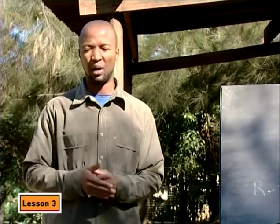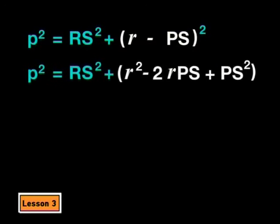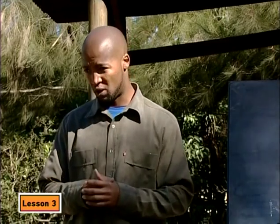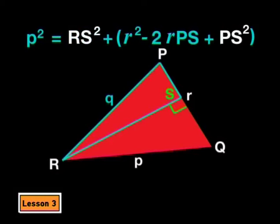Now, use your algebra to multiply out of this bracket. We get R squared minus 2 times R times PS plus PS squared. This is useful to us because the PS squared and the RS squared can be used for the Pythagoras theorem. Look at the diagram.